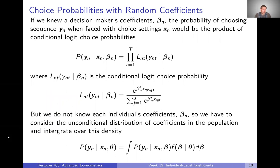Let's once again think through a thought experiment — we did this with the mixed logit model, it's basically the same idea here. If we knew a decision maker's coefficient, beta sub N, then the probability of that decision maker choosing a specific sequence of choices y sub N when faced with choice settings x sub N would just be the product of conditional logit choice probabilities. If we knew someone's beta sub N, this problem would just reduce down to a logit problem. Because there are multiple time periods or choice situations, we multiply all of these logit choice probabilities together.